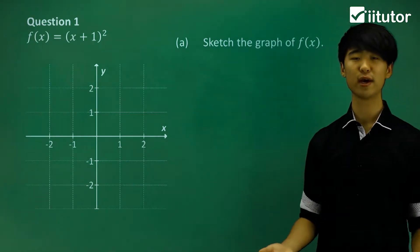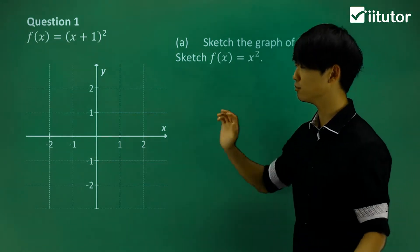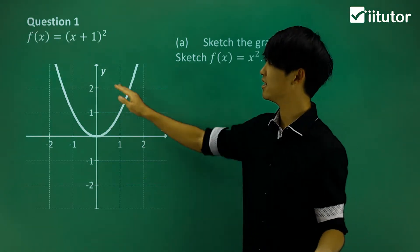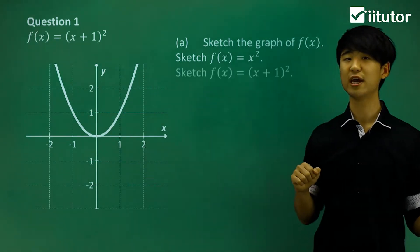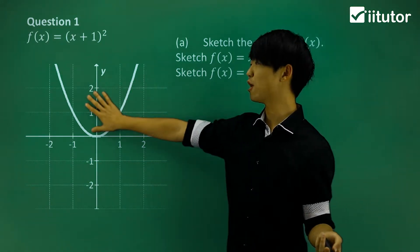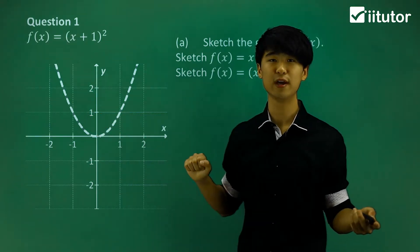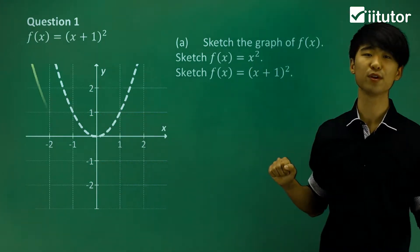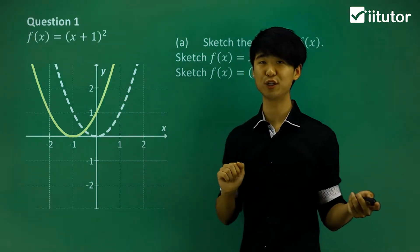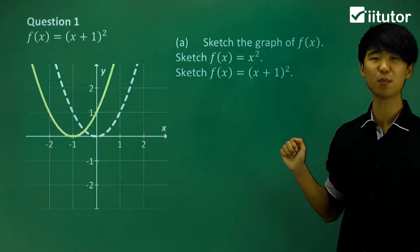One way to approach this is to start by sketching the basic parabola f(x) = x². Then, to get f(x) = (x+1)², it's the same graph but translated. We translate it one unit to the left, since plus 1 inside the bracket means a horizontal translation one unit to the left. The yellow graph is the function we want — that's part a done.